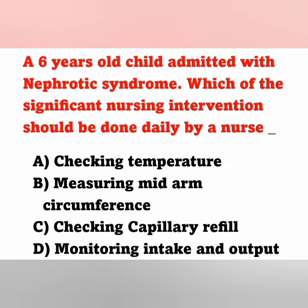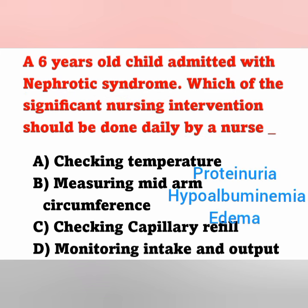Next question: a 6-year-old child admitted with nephrotic syndrome — which significant nursing intervention should be done daily? Options: A: check temperature, B: measuring mid-arm circumference, C: checking capillary refill, D: monitoring intake and output. The nurse is caring for a nephrotic syndrome child and needs to plan daily care.